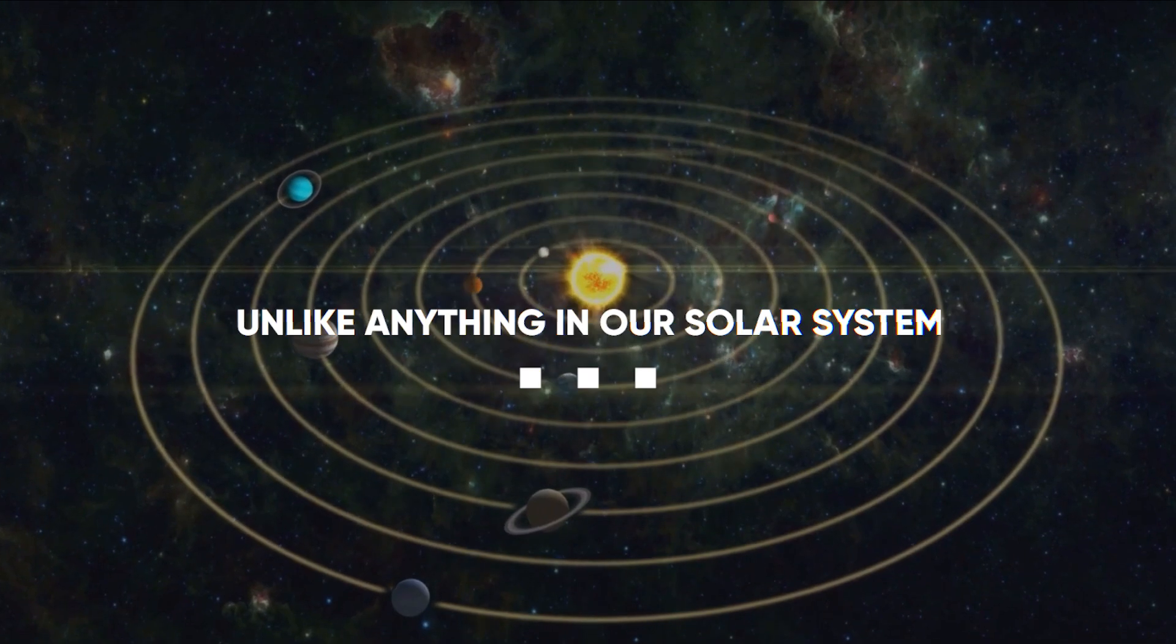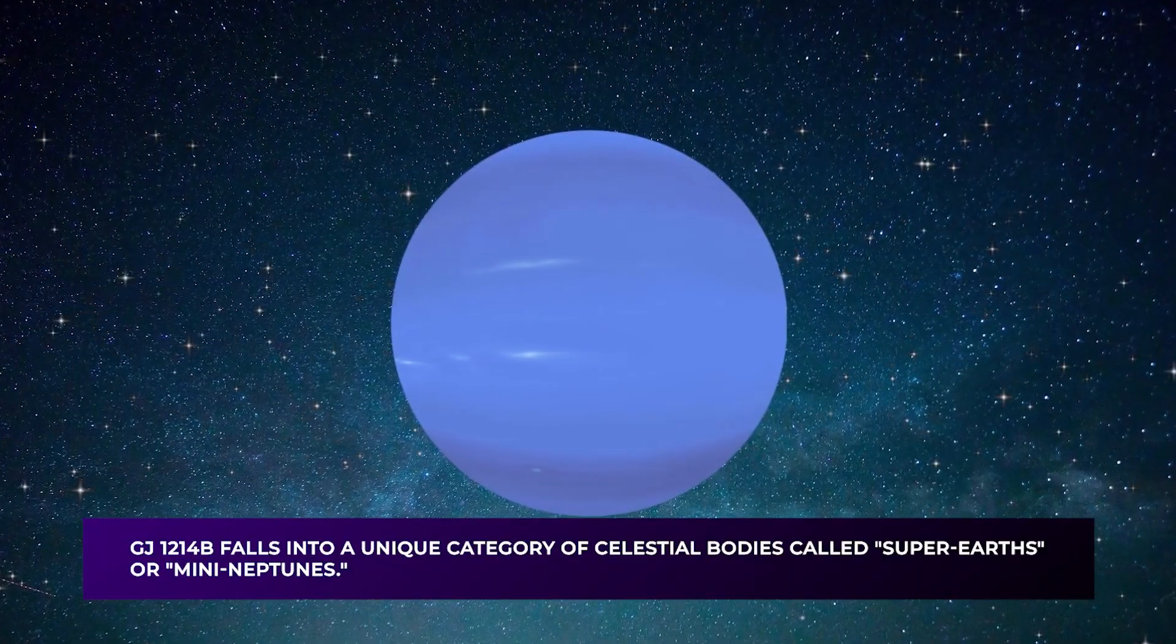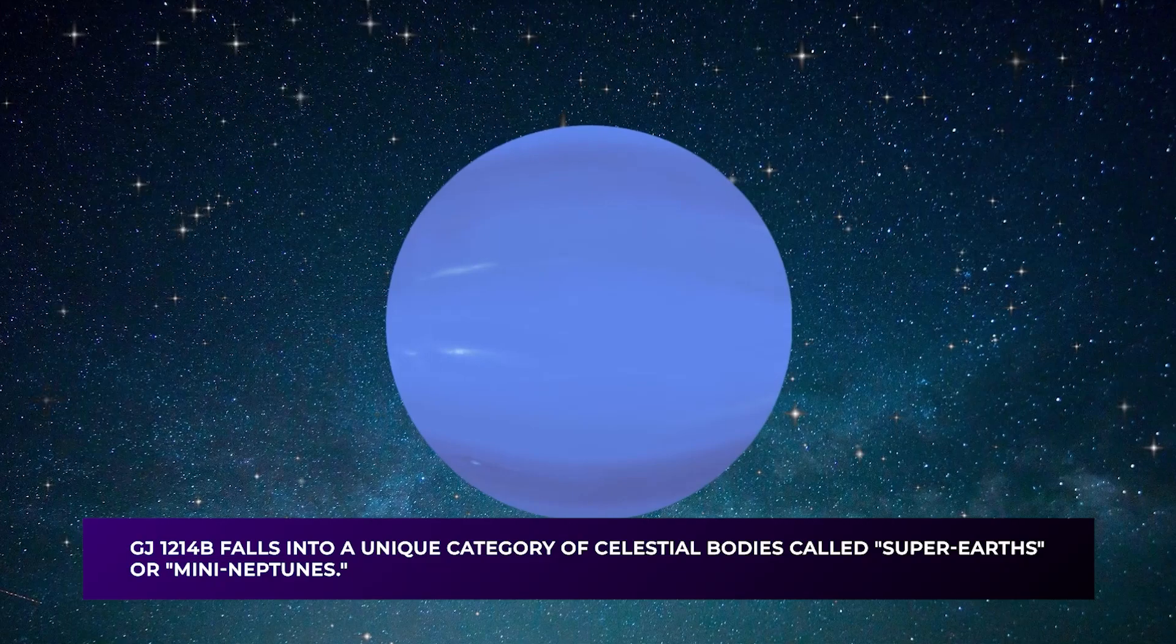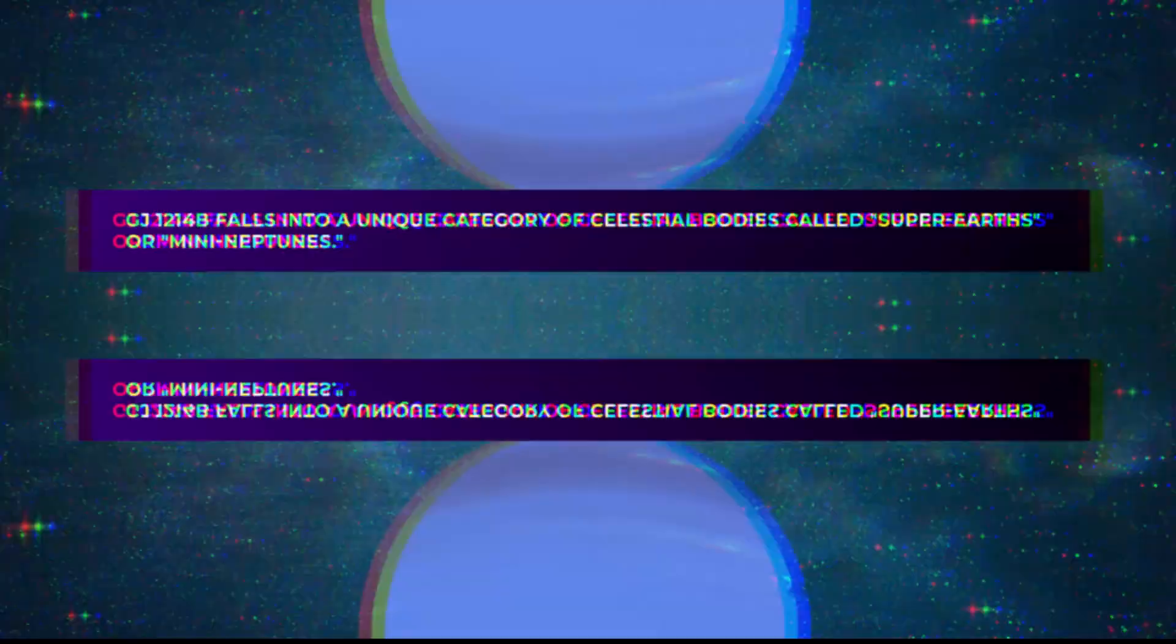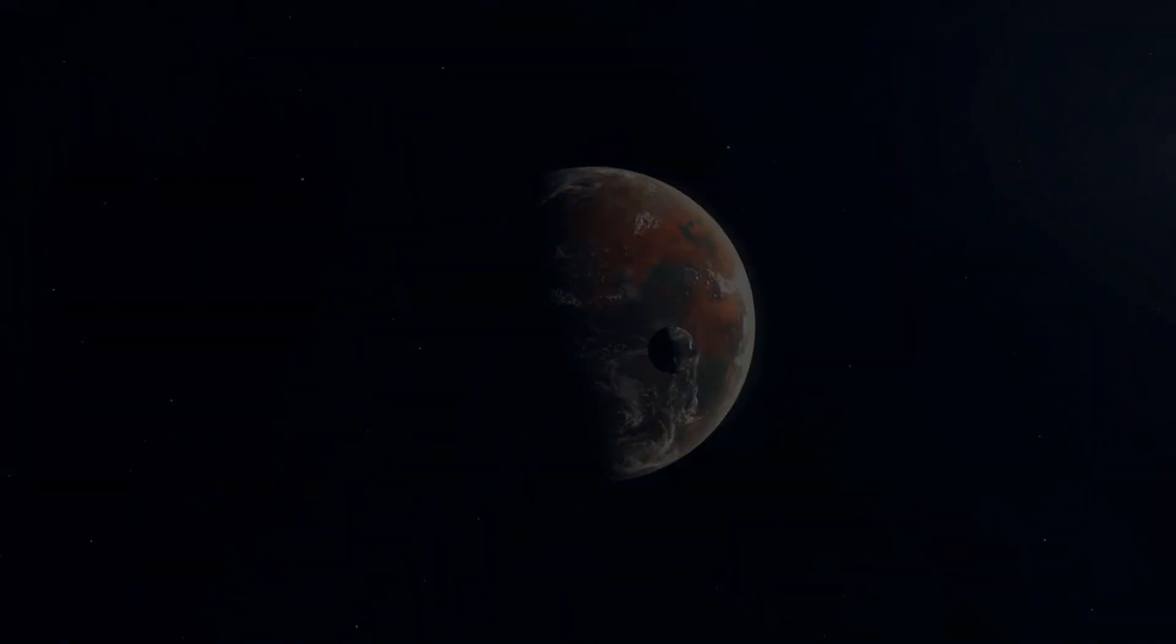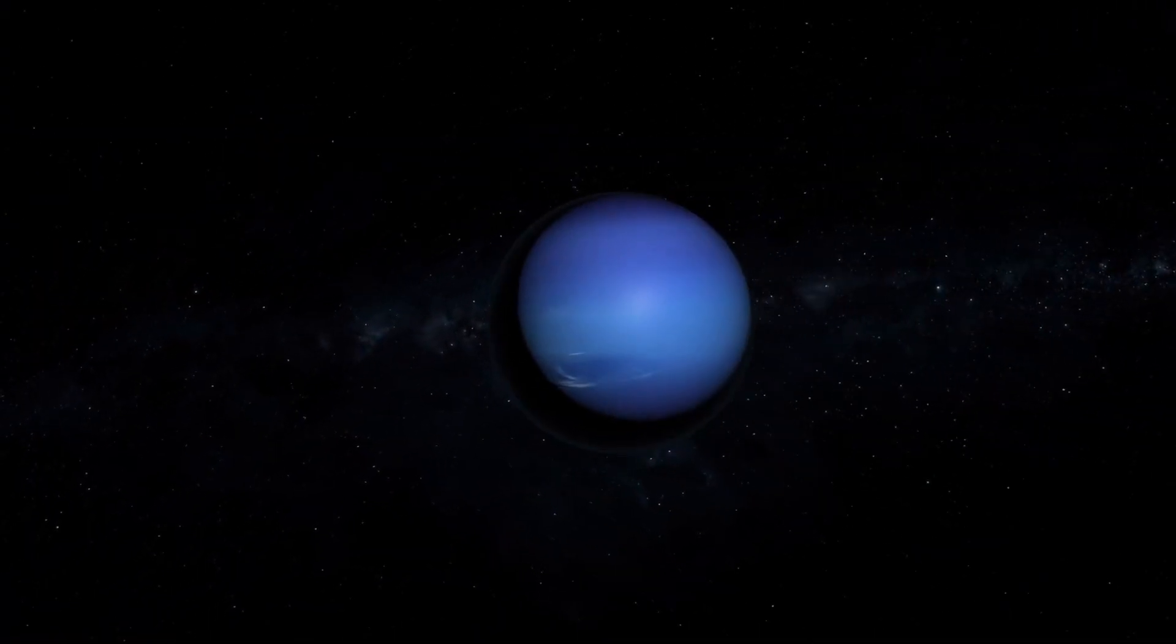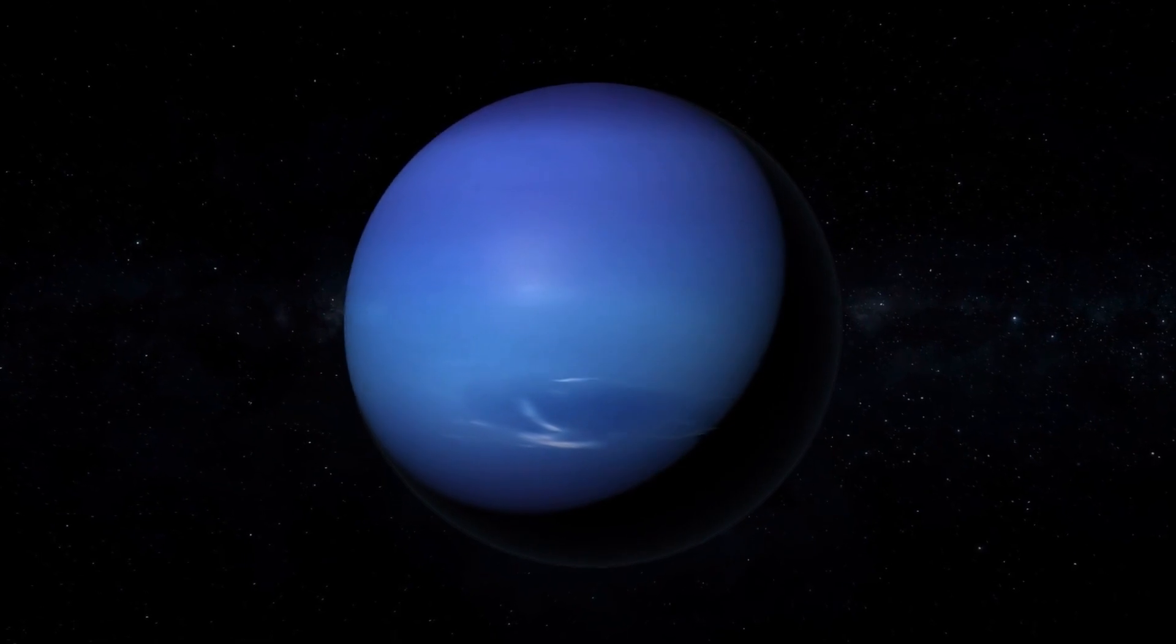Unlike anything in our solar system, GJ-1214b falls into a unique category of celestial bodies called Super-Earths or mini-Neptunes. Larger than our rocky planets yet smaller than the gas giants, this planet challenges our understanding of planetary composition.